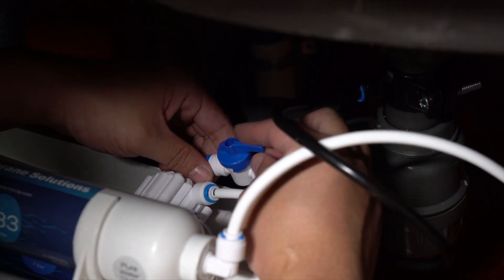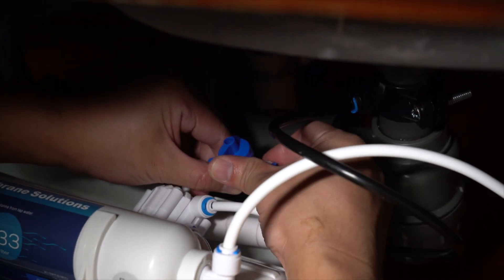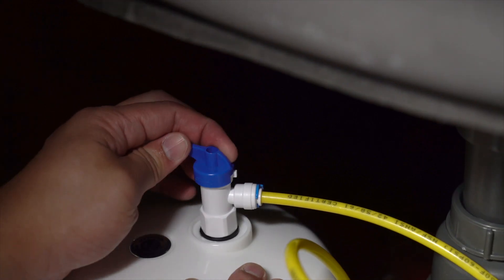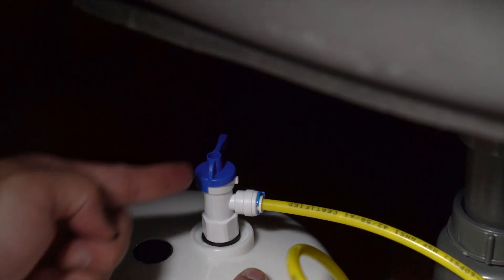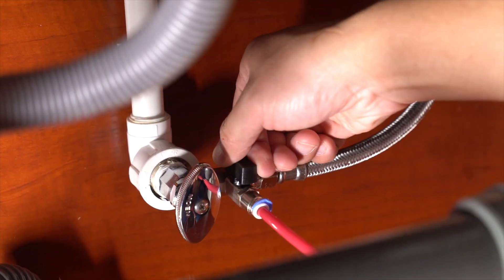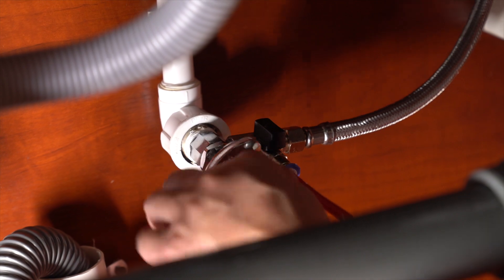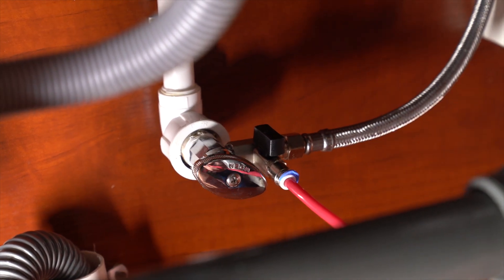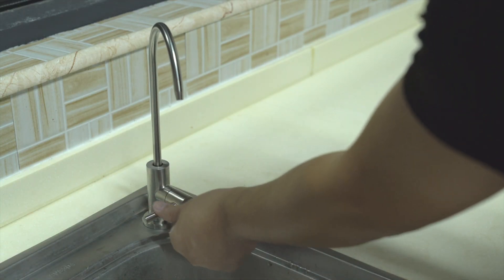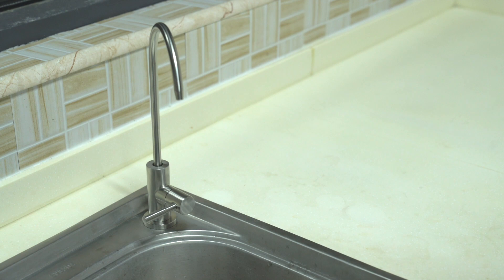Congratulations! You have completed the installation. The next stage is to commission and flush the system ready for use. Ensure the manual flush valve on the T2P central unit is closed. Close the pressure tank ball valve. Turn on the cold water shutoff valve and the feed water adapter. Open the faucet and allow the water to run to drain to rinse all components.